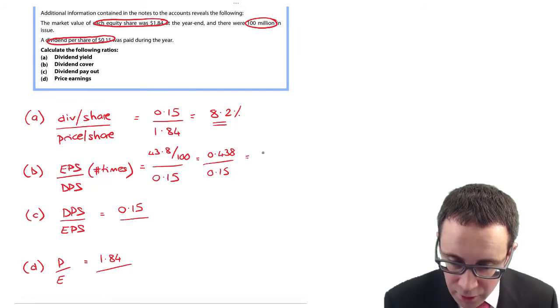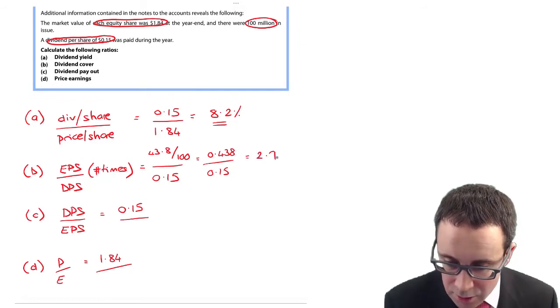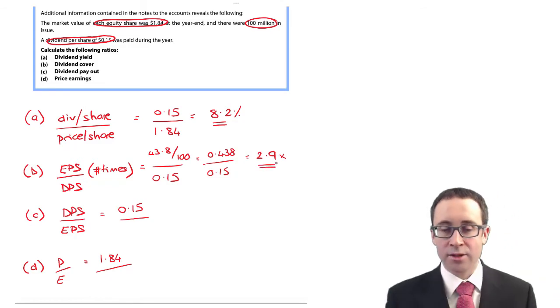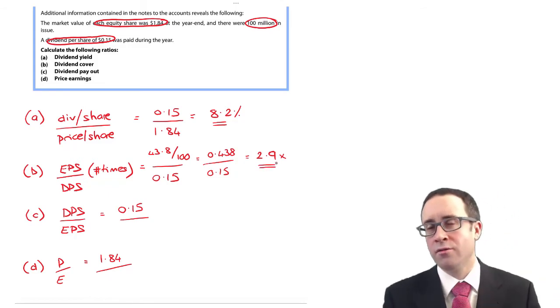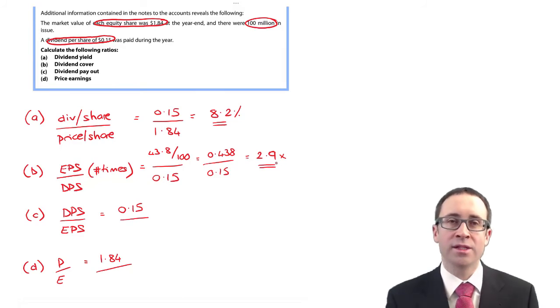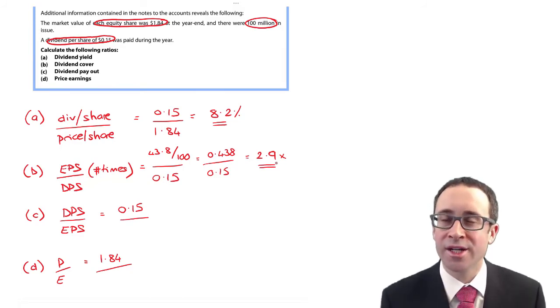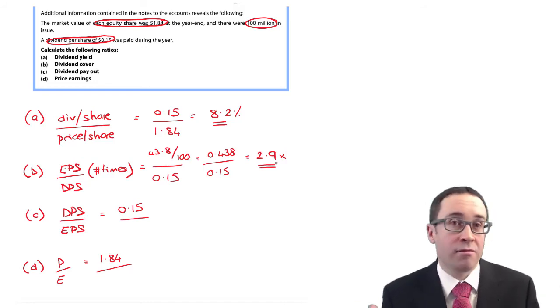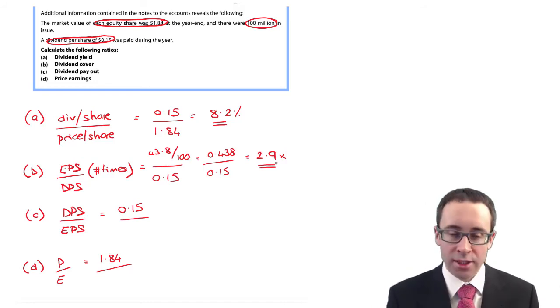So my dividend cover is that 2.9 times. So out of my earnings of $0.438 per share, that dividend of $0.15 per share can be paid out nearly three times. Is that safe? It depends upon the investor.